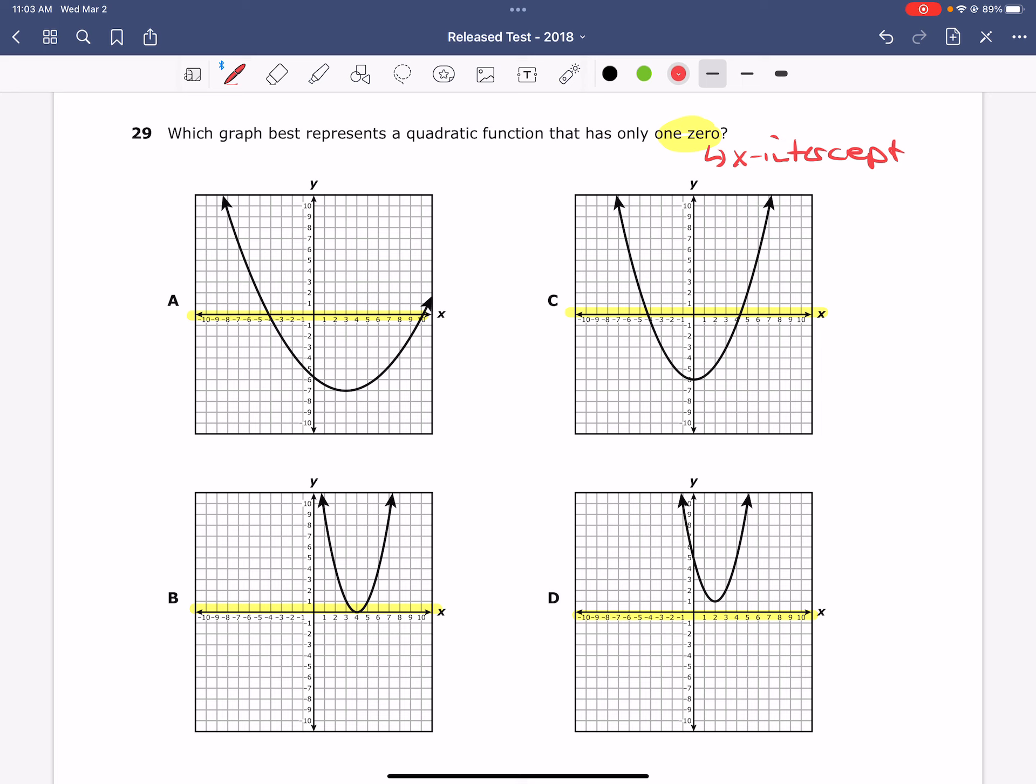Notice that in letter A, we have not just one, but two x-intercepts. The same is true in letter C. This quadratic is crossing the x-axis twice and therefore has two zeros, not just one.